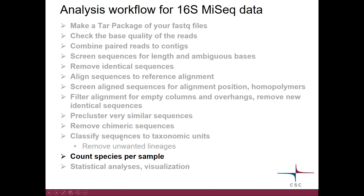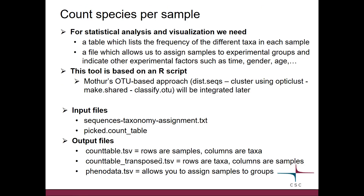Once we have classified our 16S sequences to taxonomic units, we can proceed to counting species per sample. Later on we are going to do statistical analysis and visualization, and for that we need essentially two things: a table which lists the frequency of the different taxa in each sample, and also a file which allows us to describe the experiment — assigning samples to experimental groups and describing other experimental factors.